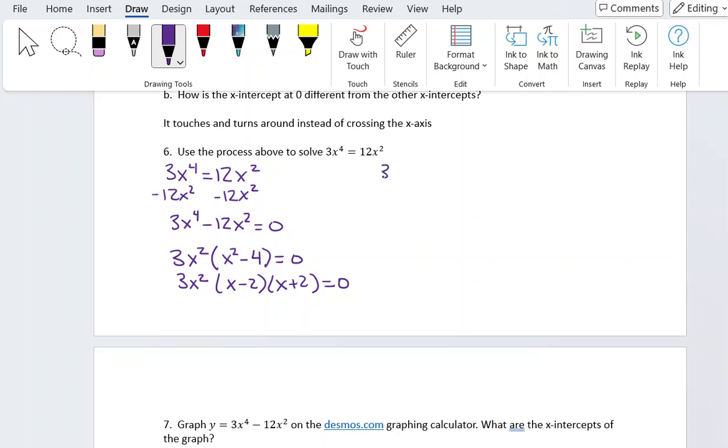So now we have 3x squared equals zero, x minus 2 equals zero, and x plus 2 equals zero. So for the first one, divide by 3 and then take the square root and we get x equals zero.